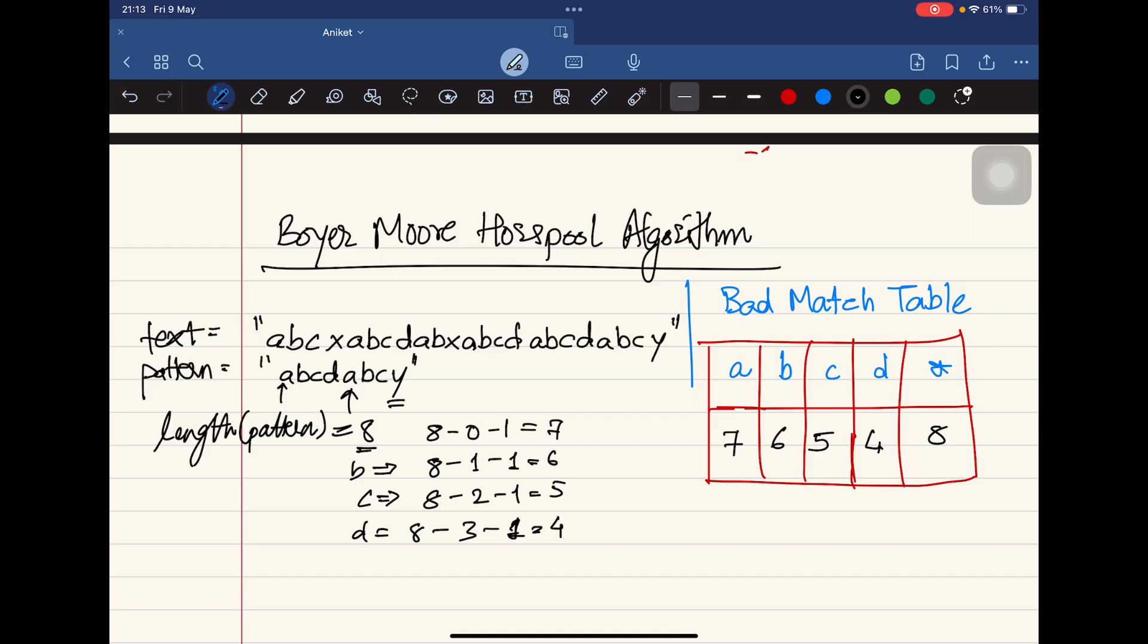Now we encounter A again. If we do A again, we need to do 8 minus 4 minus 1, which is 3. So we replace whatever value we had earlier with the new value now. So this goes and we have 3 here. The same thing goes for B: B becomes 8 minus 5 minus 1, which is 2. And then C becomes 1. So that's how we create the bad match table.